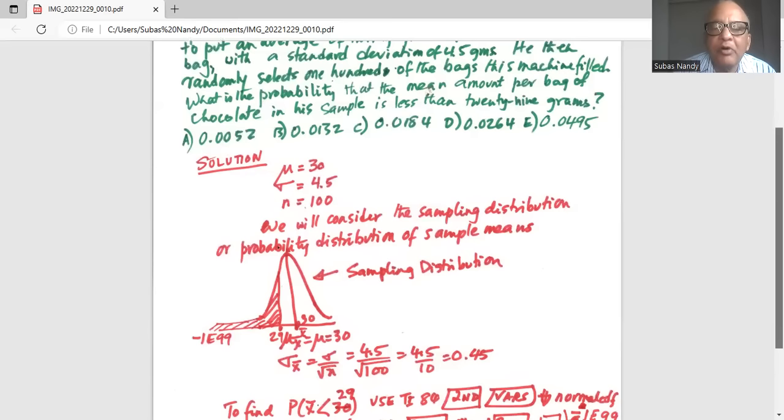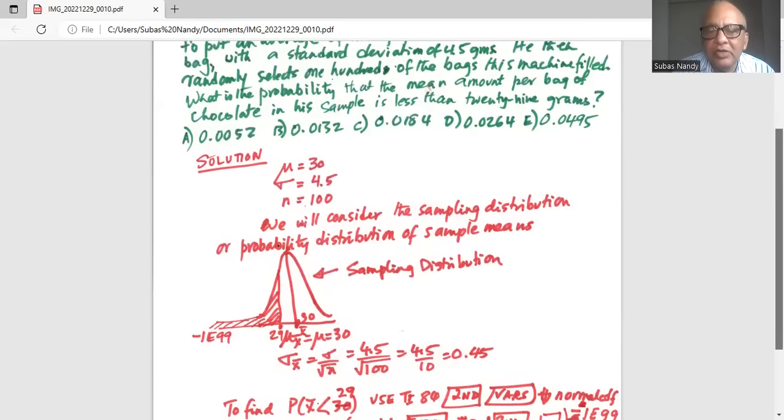Sampling distribution is the probability distribution of sample means x bar. That's why you have x bar values on the horizontal axis. Okay, so mu x bar or the mean of the sampling means is equal to mean of the population equal to 30. This comes from central limit theorem.